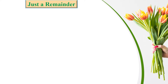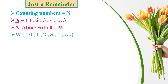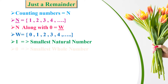Just a reminder: counting numbers are indicated by N — that means natural numbers equal to the set of one, two, three, four, five, six, seven, and so on. Natural numbers along with zero are called whole numbers. Whole numbers equal to the set of zero, one, two, three, four, five, six, and so on. One is the smallest natural number. Zero is the smallest whole number.